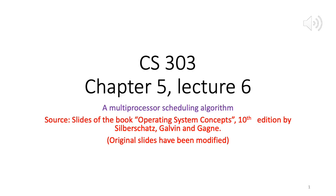Welcome to lecture number six for chapter five of CS303 Operating Systems. Today we are going to discuss a multiprocessor scheduling algorithm. Up until now, we have assumed that our machine consists of only a single CPU, which makes the problem easier to solve because there is only one CPU and therefore the decision of which CPU a process must be scheduled on does not need to be made.